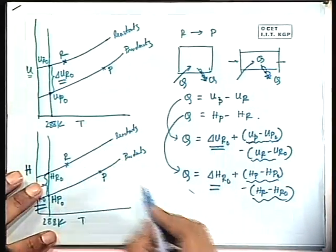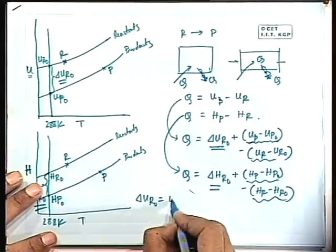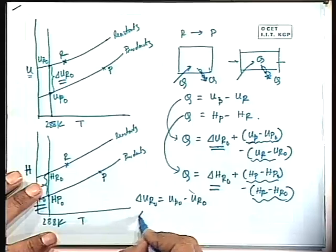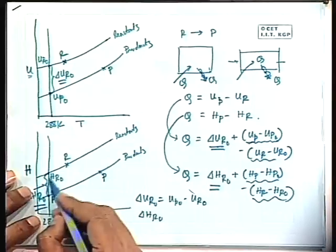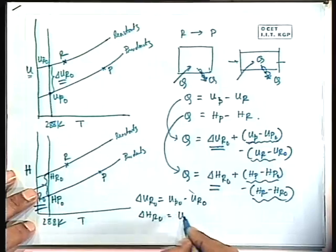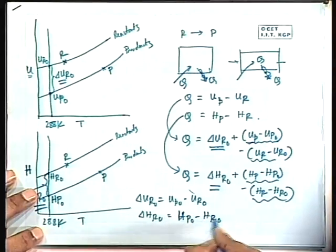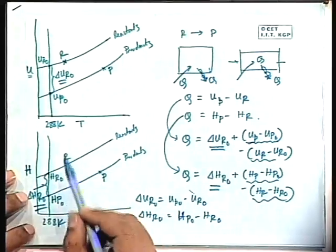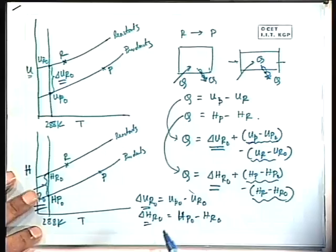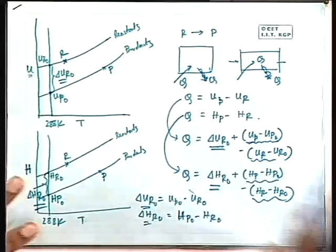If we write the equation this way, it is convenient to calculate. For those equations where ΔU_R0 is negative — which is U_P0 minus U_R0, meaning product minus reactant — similarly ΔH_R0 is H_P0 minus H_R0. For these two curves where reactants have higher internal energy and enthalpy, these quantities are negative (less than zero). So if you substitute that, under usual conditions Q becomes negative, meaning heat is being rejected from the system.